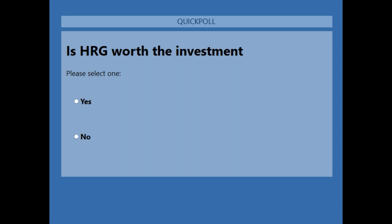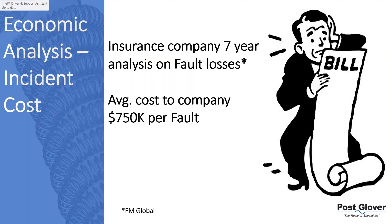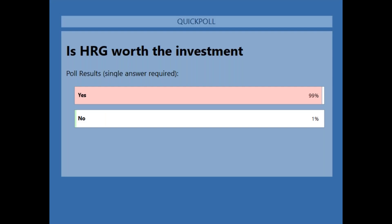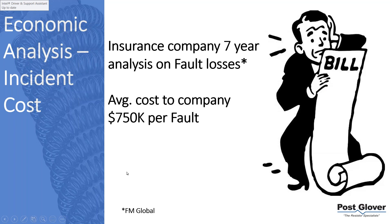Moving to incident costs: a seven-year analysis on fault losses found the average cost per fault was about $750,000 per company. Typically we're talking about solid ground systems where a ground fault — which starts that way 95% of the time — can degrade into a phase-to-phase or even a three-phase fault because of all that energy, which is where most of the damage occurs.